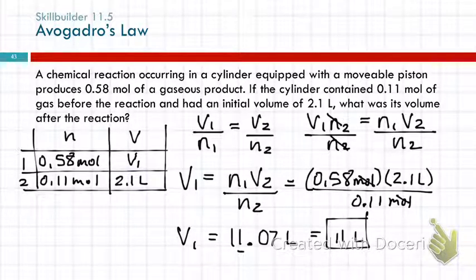And then we need to ask ourselves, does the answer make sense? Well, in Condition 1, we've got 0.58 moles of gas. In Condition 2, we have 0.11 moles. So the smaller amount of gas has a smaller volume. The larger amount of gas has a larger volume. That makes sense.